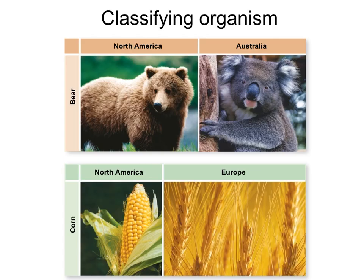For a long time humans have puzzled about how we group organisms together, and this is important because once we group an organism into a group, we can make inferences — such as the things that affect one member of that group may affect other members. So that can help us in understanding how animals behave or function, understanding crops and their requirements. If we know that corn and wheat are related, we can infer that the requirements for growing them are going to be similar.